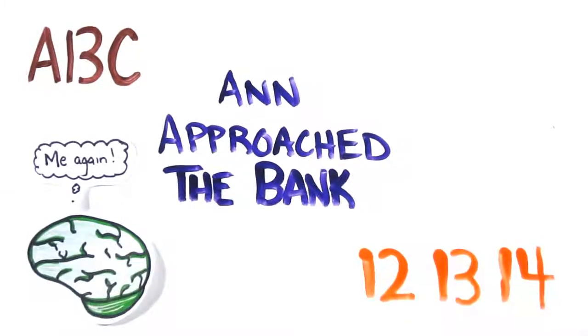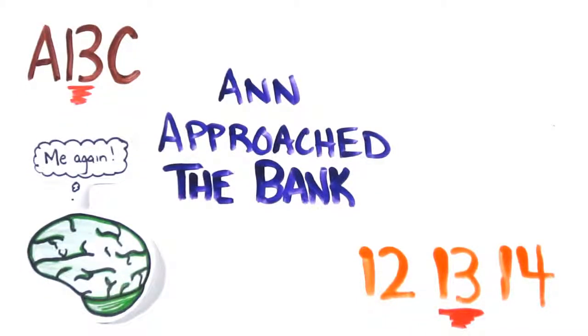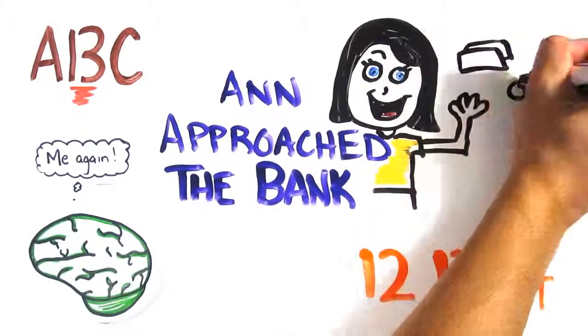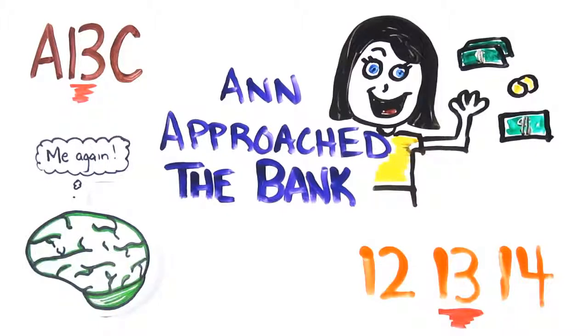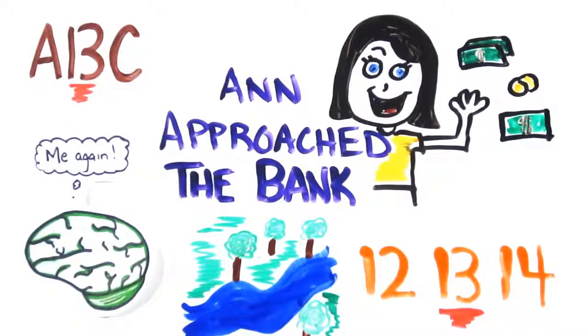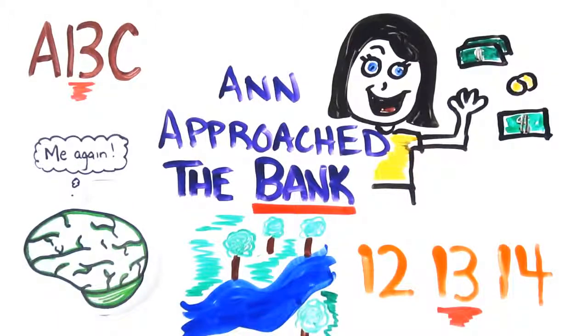You could have read it as A, 13, C or 12, B, 14. But your brain created the context unconsciously. Also, you likely imagined a woman with money on her mind walking towards a building with tellers. But if the sentence before this was, they were floating gently down the river, the entire scene would have changed because bank is no longer associated with money.